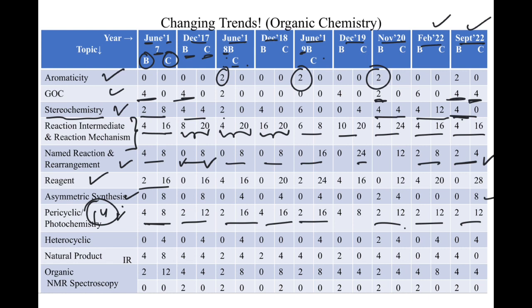Heterocyclic chemistry has more questions in Section C. Organic spectroscopy has consistently earned good marks in both Section B and C across previous years. Overall, the trend for organic is almost similar to previous years, though this time we did not get a 4-mark structure determination question from the spectroscopy part.